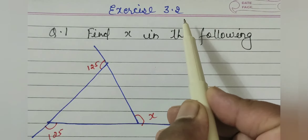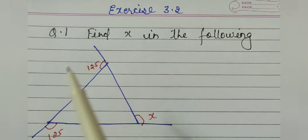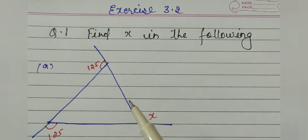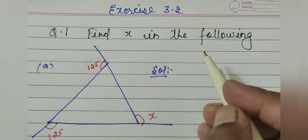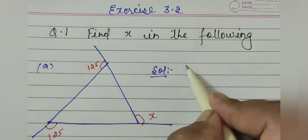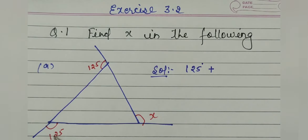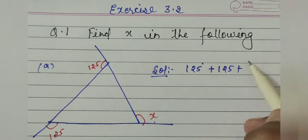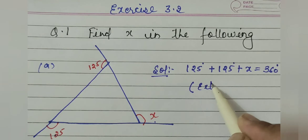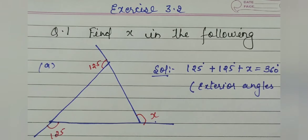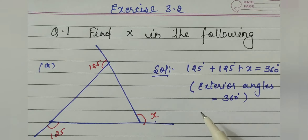Now we will start Exercise 3.2, question number 1: find x in the following. In part A, a triangle is given with three exterior angles shown, and we have to find the exterior angle x. I will solve this using the exterior angle sum property of any polygon: 125 plus 125 plus x equals 360 degrees. The sum of exterior angles equals 360 degrees — this is the property of exterior angles.